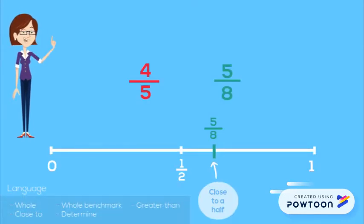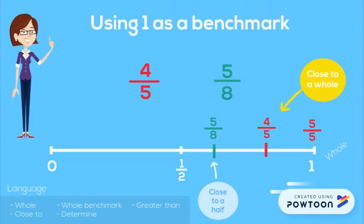Instead of using the half benchmark, we can see that 4/5 is actually closer to 5/5, which is a whole. Here we have used the whole as a benchmark to determine that 4/5 is greater than 5/8.